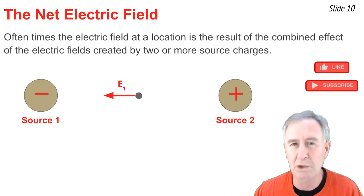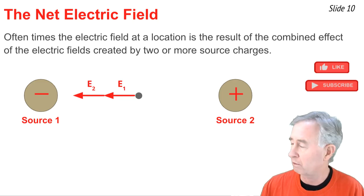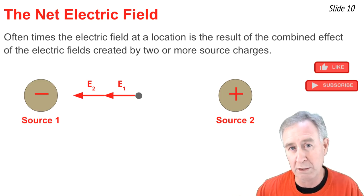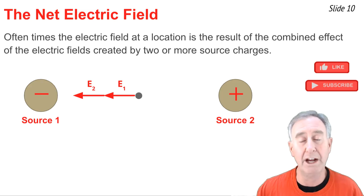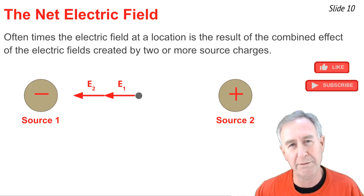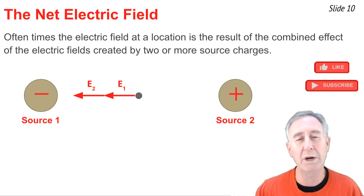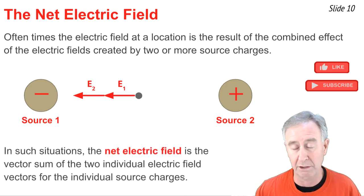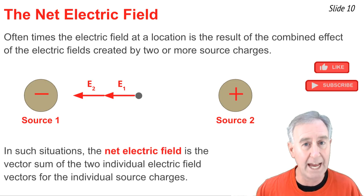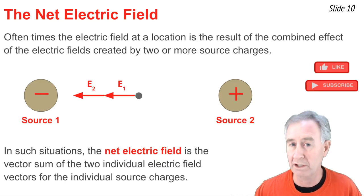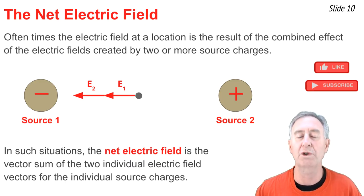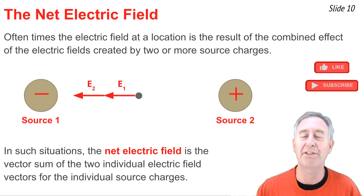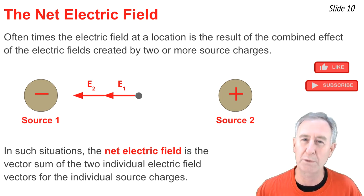Then we calculate the electric field created by source 2 at this location. Because source 2 is positive, that electric field would also be directed to the left, away from the positive source charge. Once we determine these two electric field vectors, the net electric field is the result of adding these two vector quantities together as vectors to determine the net electric field at the midpoint between the two sources.